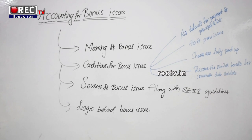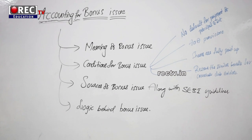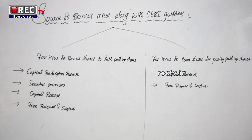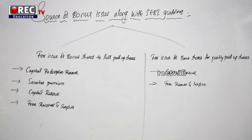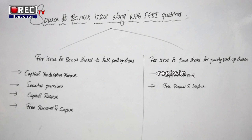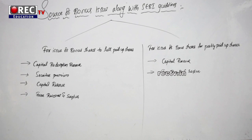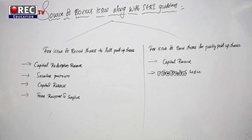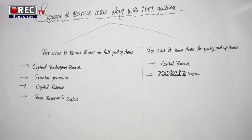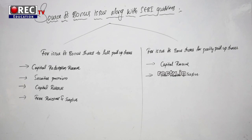Now let us see what are the sources of bonus issue along with SEBI guidelines. We have two segments: one for issue of bonus shares to fully paid up shares, and one for issue of bonus shares for partly paid up shares. For fully paid up shares, we can use reserves like capital redemption reserve, securities premium, capital reserve, and free reserves and surplus.